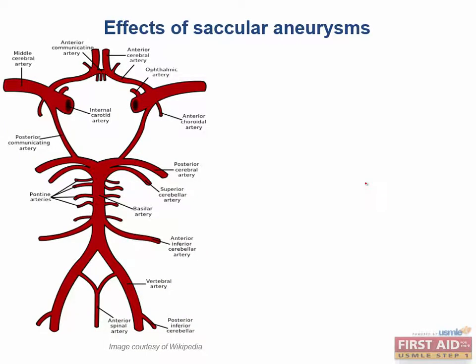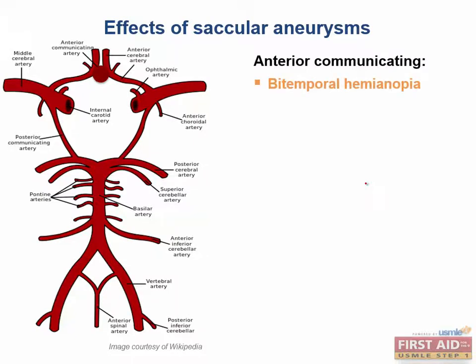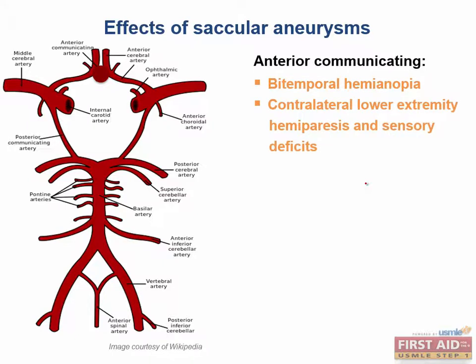An aneurysm at the anterior communicating artery could compress the optic chiasm. This would cause a bitemporal hemianopia. We'll talk about this in more detail when we reach the ophthalmology section. But thinking back to the homunculus, what part of the body would be affected by the ischemia caused by an aneurysm in the anterior communicating artery? That would be the contralateral lower extremity, affected by both sensory as well as motor deficits.